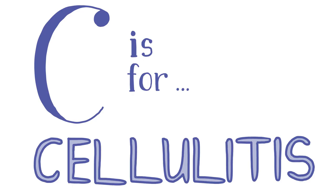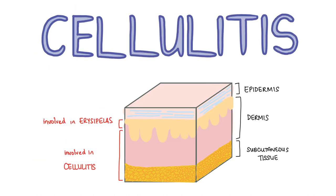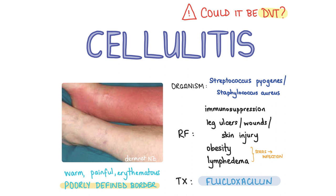C is for cellulitis. Cellulitis is a spreading bacterial infection of the skin involving the lower dermis and subcutaneous tissue. Compare this to erysipelas, which is an acute superficial form of cellulitis and involves the upper dermis. Cellulitis may be caused by Streptococcus pyogenes or Staphylococcus aureus. Risk factors include immunosuppression, wounds, leg ulcers, skin injury, obesity and lymphoedema. Cellulitis most commonly affects the lower limbs. Patients will present with a warm, painful area of erythema with a poorly defined border, unlike erysipelas which is well defined and associated with oedema.